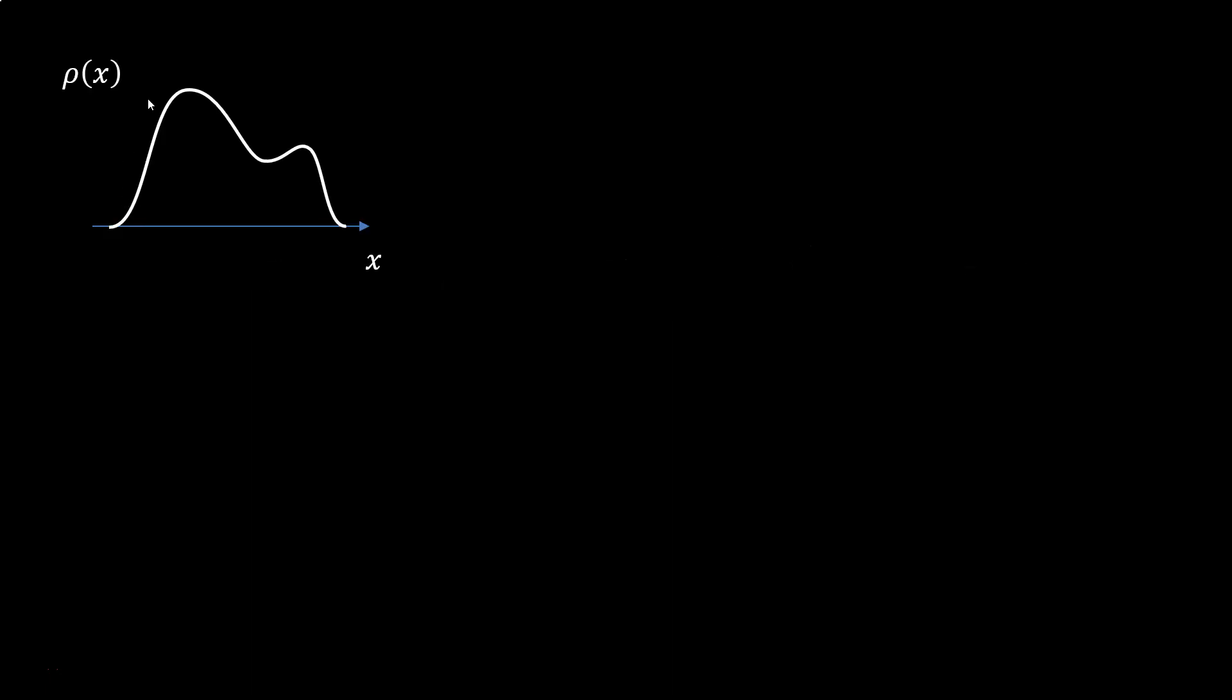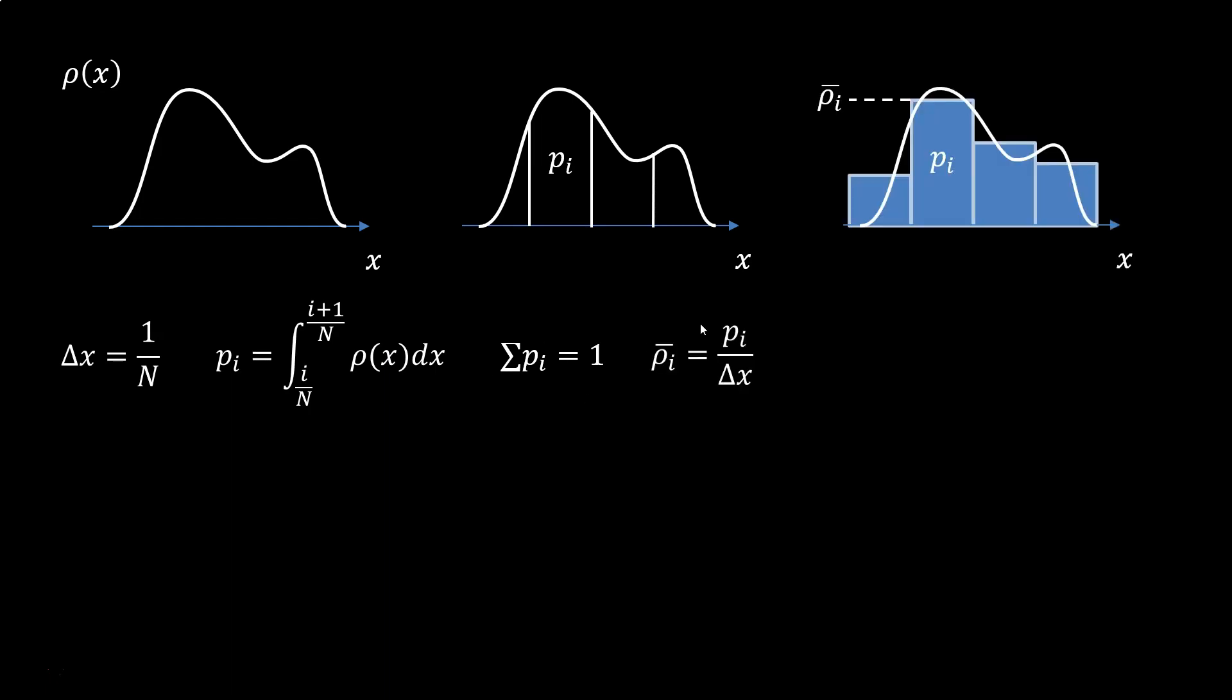Let's start with a distribution rho of x. Note that rho does not give us a fraction or a probability, it gives us a density. So we divide the range in intervals of size 1 over n, where n is the number of intervals in a unit of x. We integrate within each interval i, and get an associated pi. The sum of all pi's will be 1.